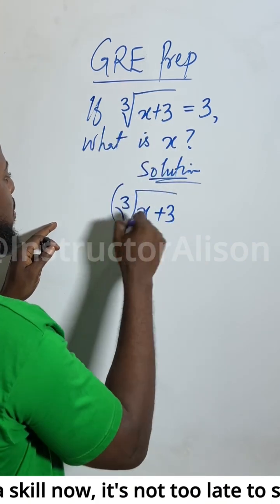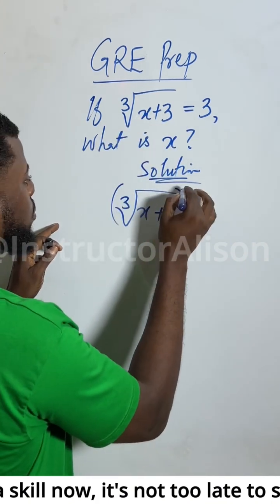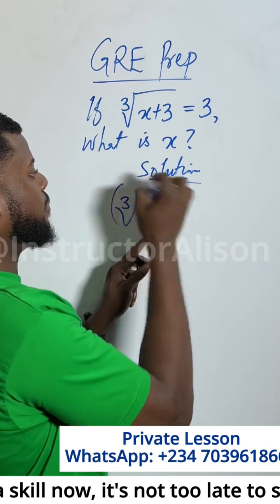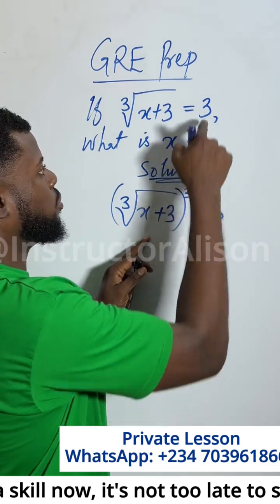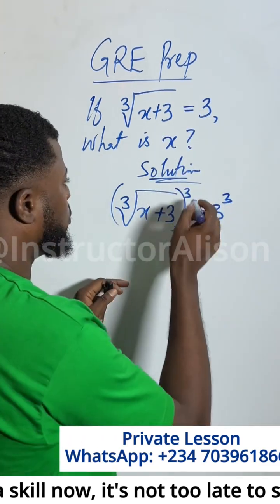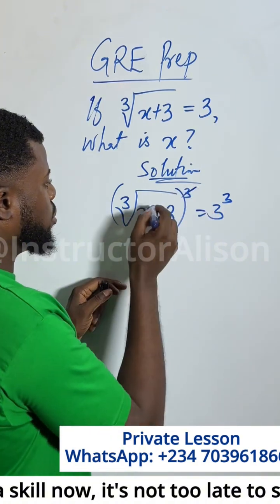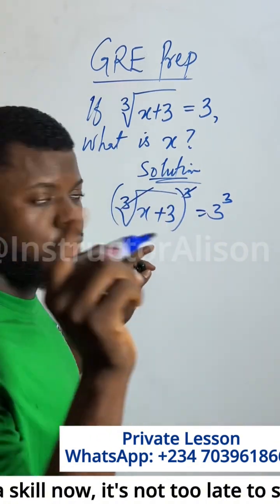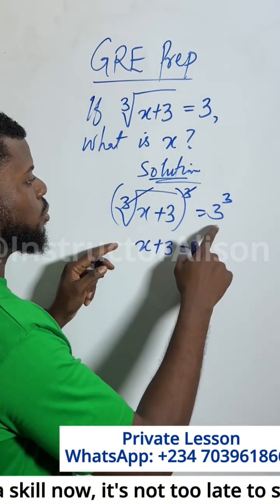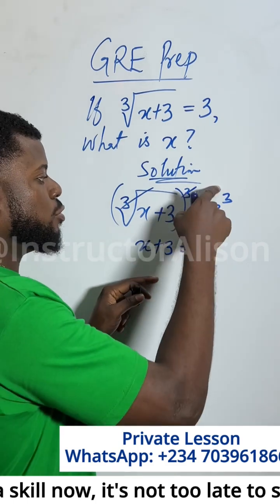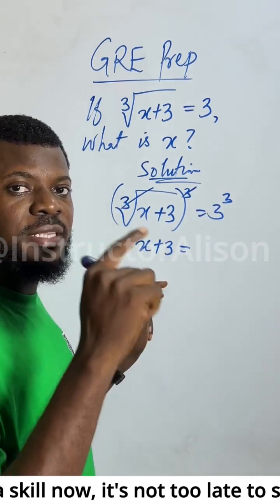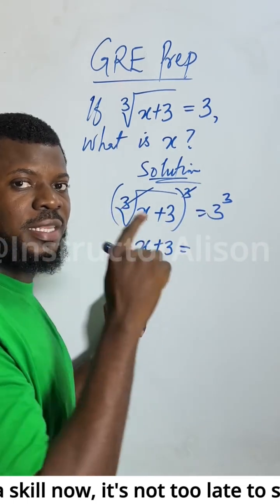Here I will apply the cube to this side. If I introduce a cube to the left, I introduce the same cube to the right — that's standard. This cube will now remove the cube root. We get x plus 3 equals 3 cubed, meaning 3 times 3 times 3. 3 times 3 is 9, and 9 times 3 is 27.